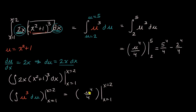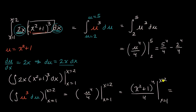Now we back substitute: since u equals x squared plus one, this becomes x squared plus one to the fourth power over four, evaluated at x equals two and x equals one. When x equals two, we get two squared plus one, which is five to the fourth over four. Minus one squared plus one, which is two to the fourth over four — the exact same result. So either way, you can keep it as a definite integral and change the bounds in terms of u, or evaluate the indefinite integral, back substitute, and then apply the bounds.